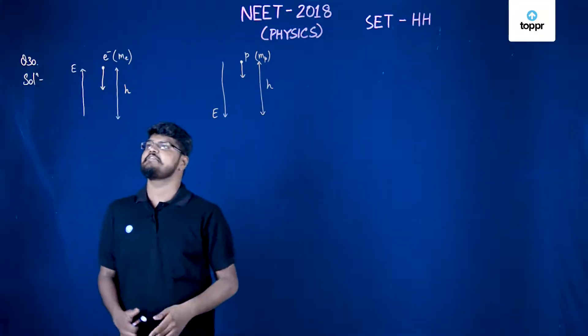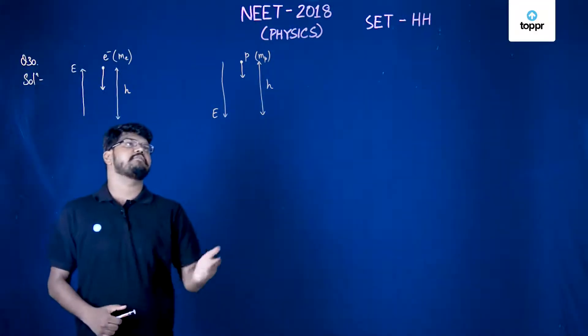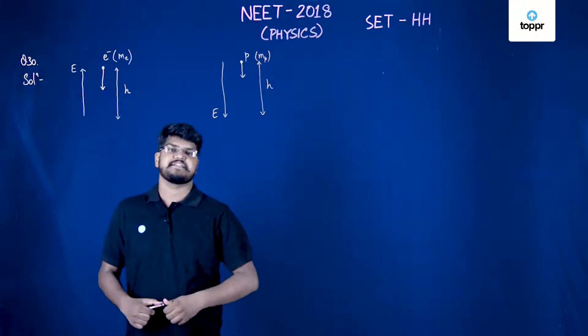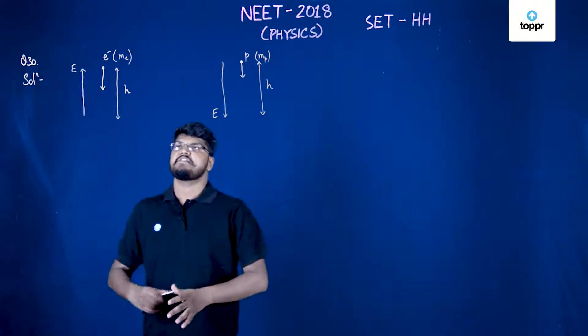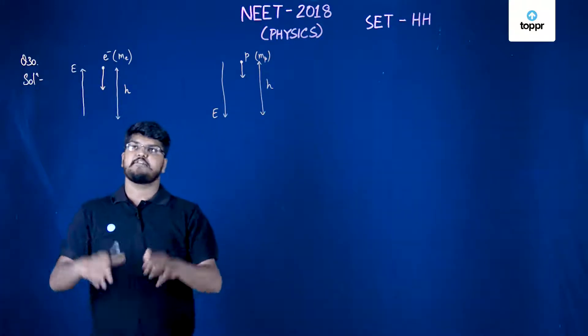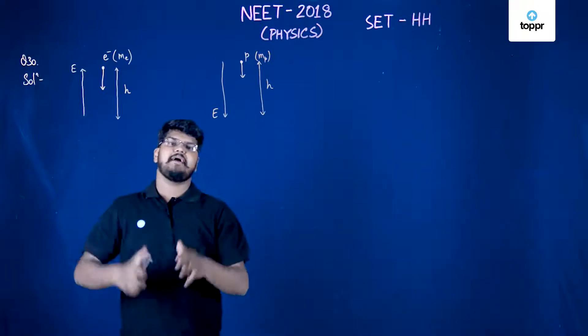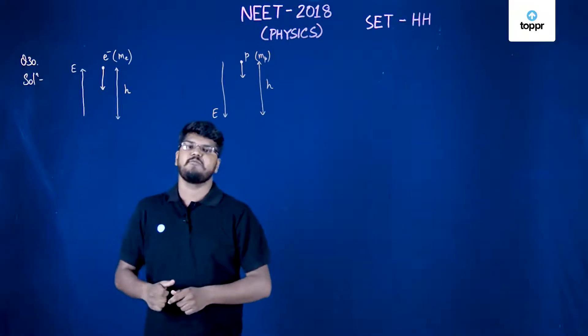Hey guys, let's take a look at question number 30 of NEET 2018 physics paper, set HH. In this question, an electron and proton are falling through a vertical distance, and we have to find which of these will move faster.